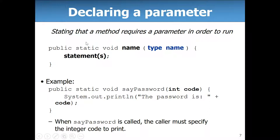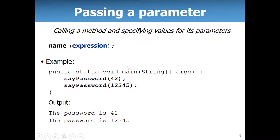Here's how a method with a parameter looks: `public static void sayPassword(int code)` — we don't know what void means yet, but we'll get to that today. When sayPassword is called with a value, it will print out that code. So if I call sayPassword(42) it prints 'the password is 42', and if I call sayPassword(12345) it prints 'the password is 12345'. Everybody should be familiar with this from the homework.